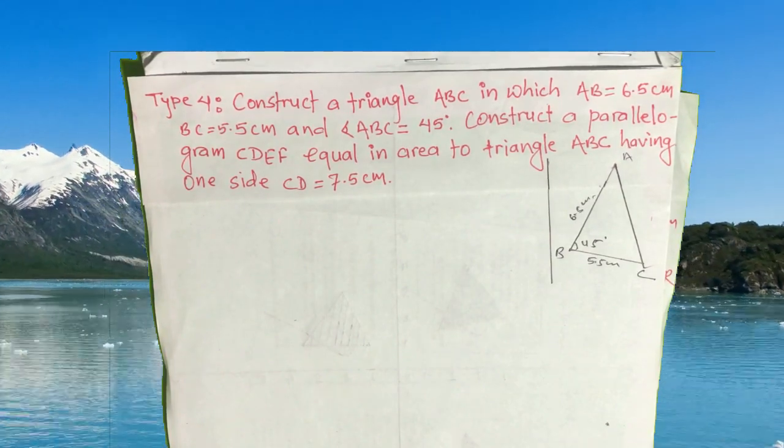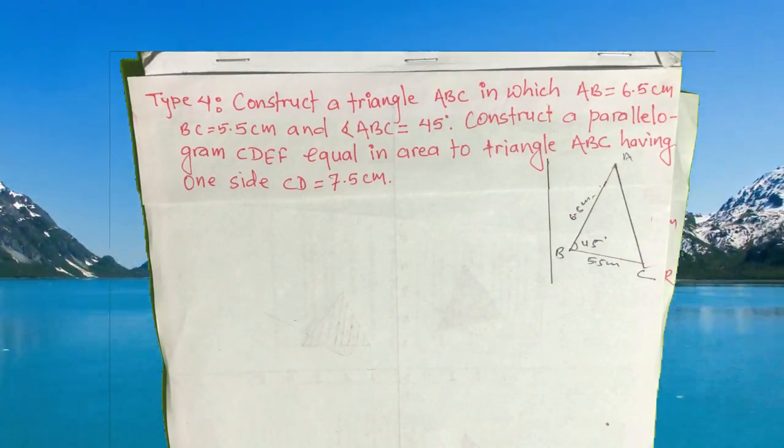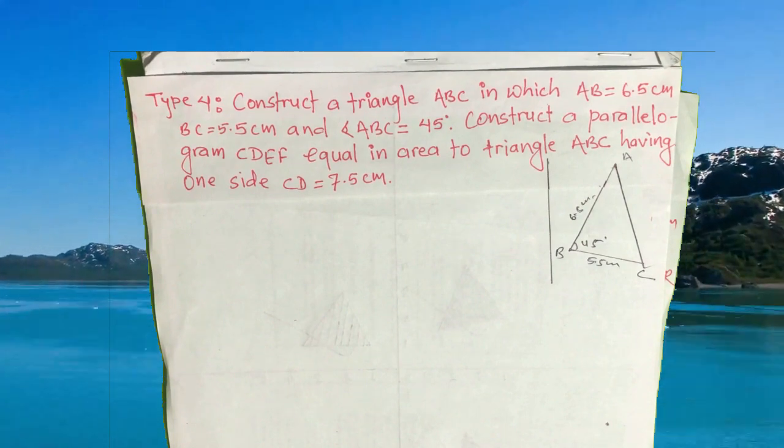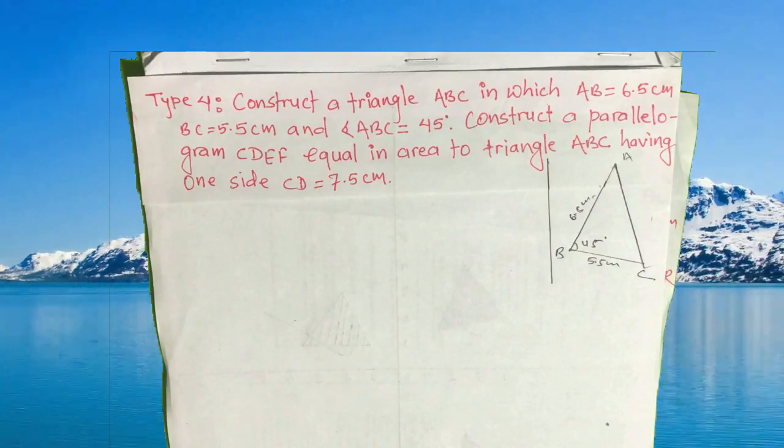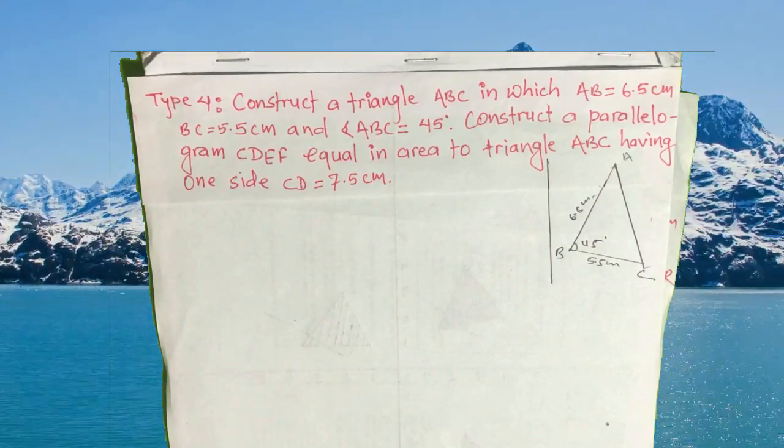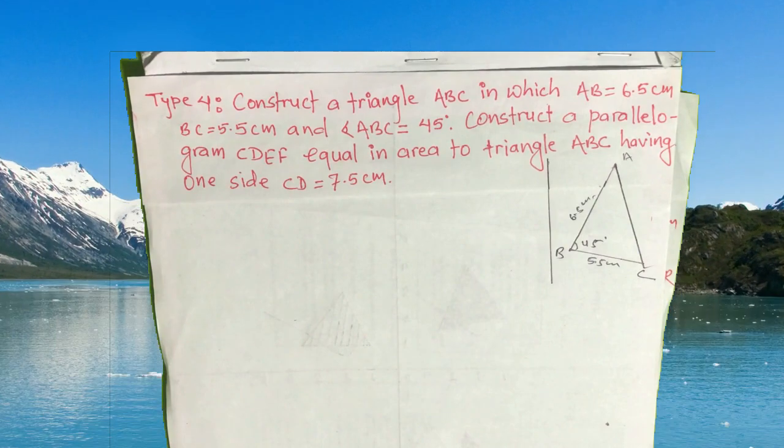Triangle ABC and parallelogram CDEF have common point C. We'll use BC as the base. So first, draw a straight line of 5.5 centimeters.